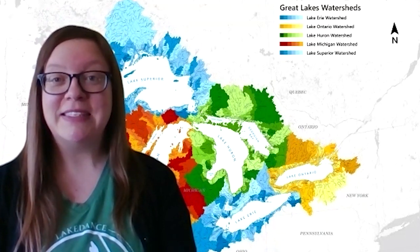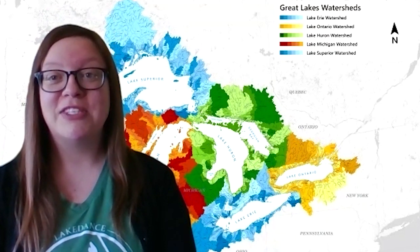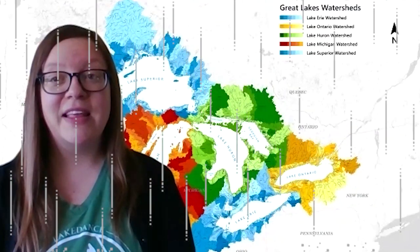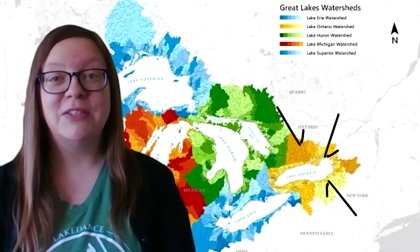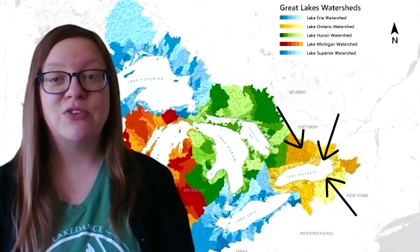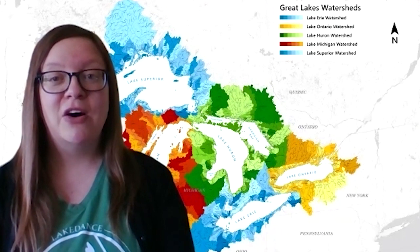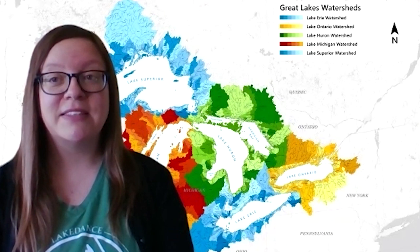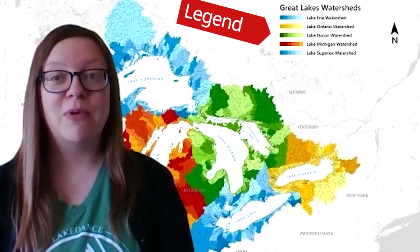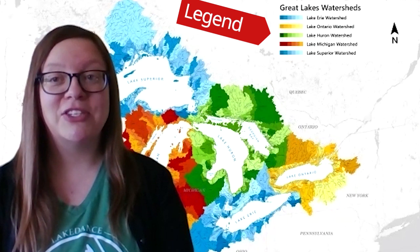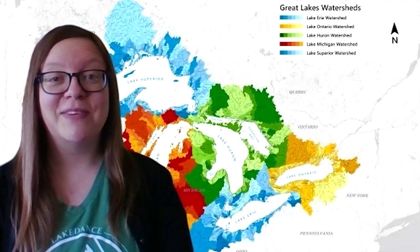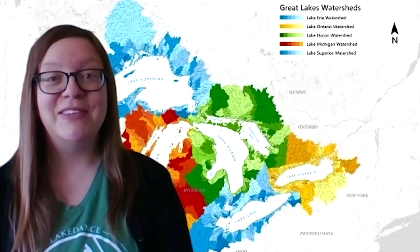We'll start by looking at this Great Lakes basin or watershed map. A basin or watershed is all the land that drains into a body of water. When rain or snow fall on the land, all that water goes into a watershed. This map shows the land that drains into the Great Lakes, and all of the water that falls on that land eventually drains into one of the Great Lakes. The legend on this map tells us which color represents each of the lake's watersheds. Within the lake watersheds are smaller watersheds of land that drain into rivers, and these rivers drain into the lakes.